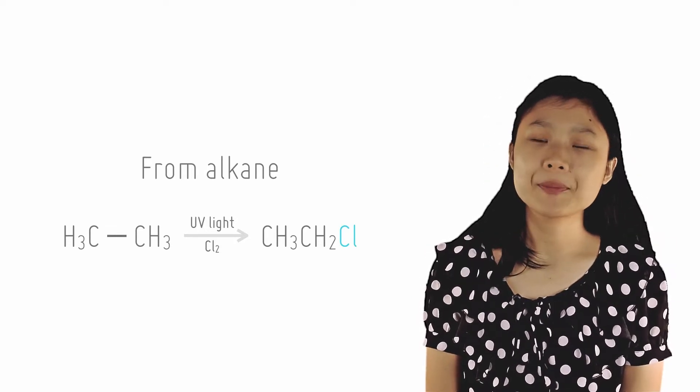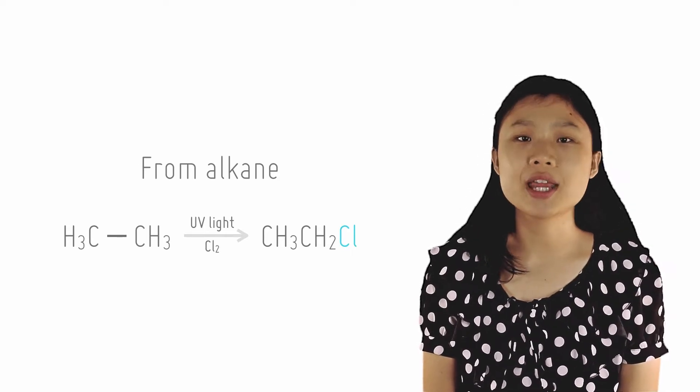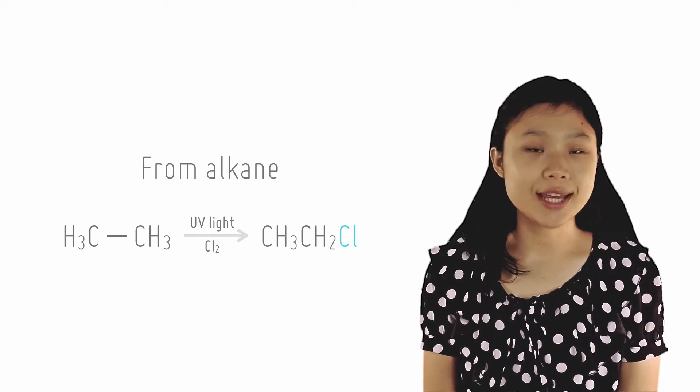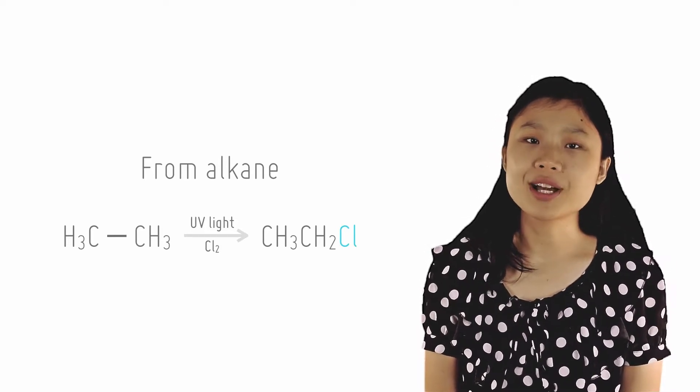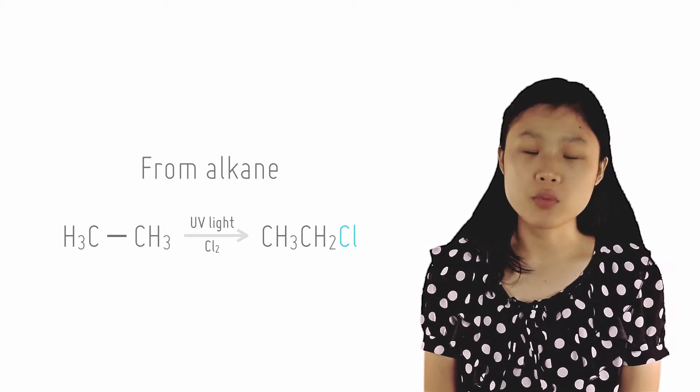For a quick recap, alkanes undergo halogenation through free radical substitution in the presence of heat or UV light. This was covered under the alkanes chapter. A mixture of products will be formed as poly substitution and different termination steps will occur.